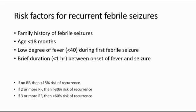These are some of the risk factors for recurrent febrile seizures. There are 4 risk factors: family history of febrile seizure; the age of the child is less than 18 months; low degree of fever, which is less than 40 degrees during the first episode; and brief duration, which is less than 1 hour between the onset of fever and onset of the seizure — meaning the seizure happens within less than 1 hour after the fever starts.